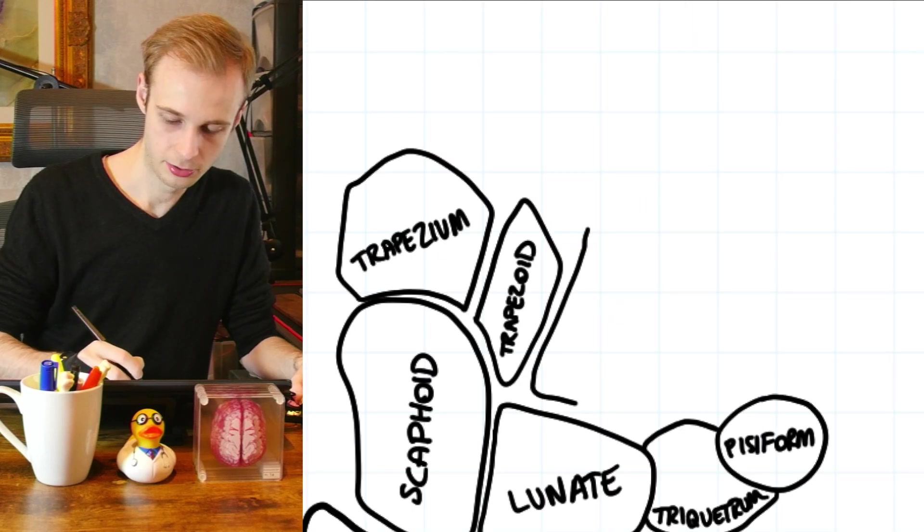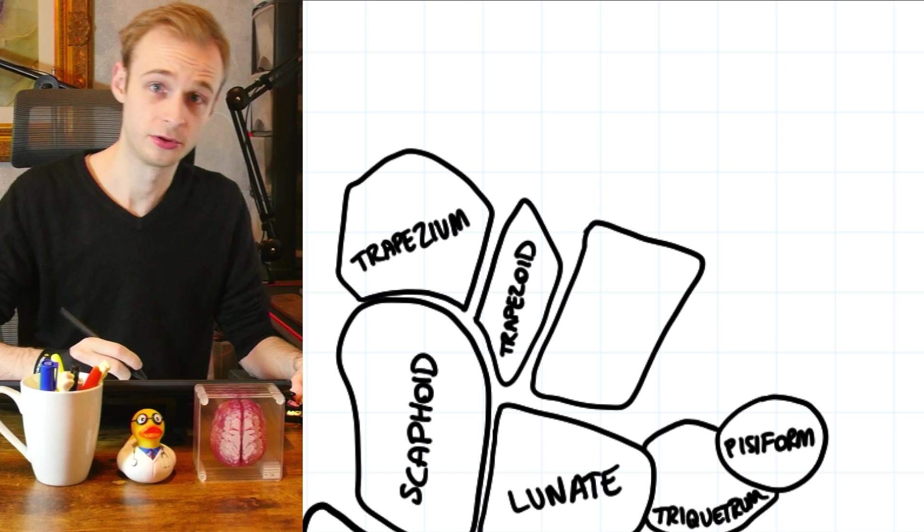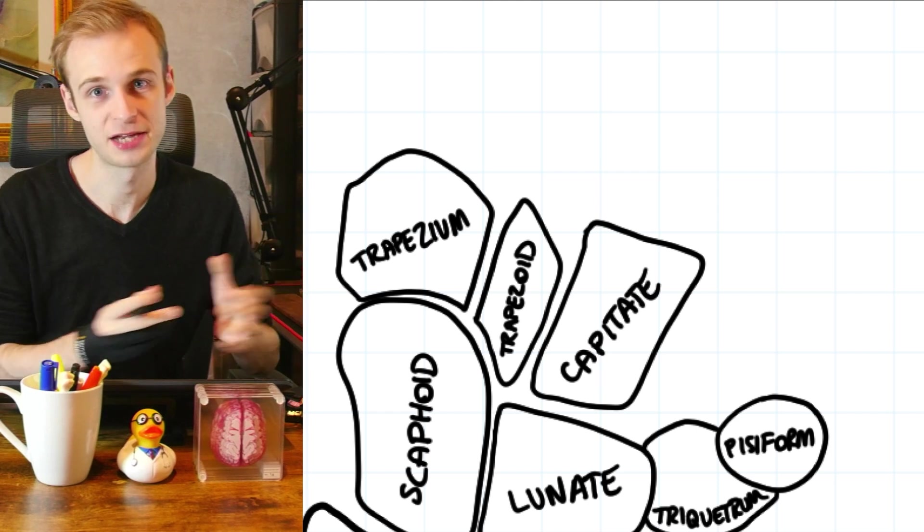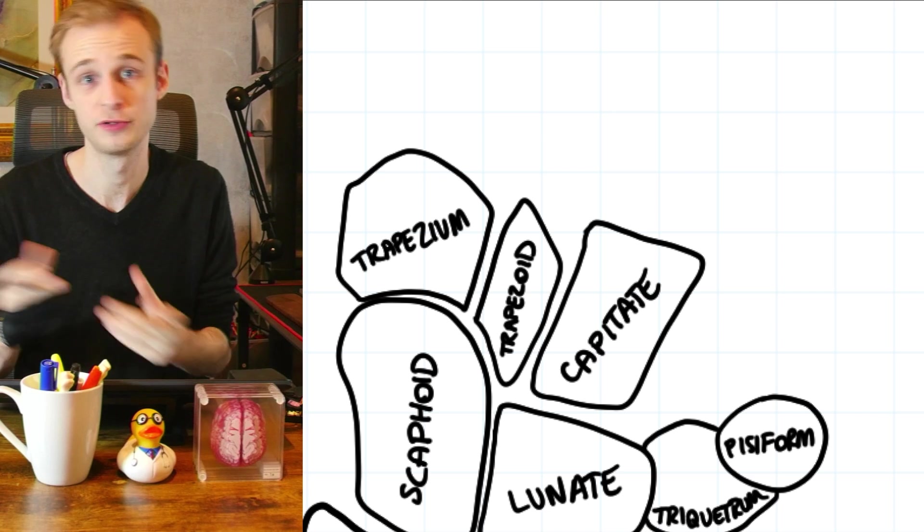Now the third bone in the distal row is called the capitate. Capitate moving back to Latin again from caput meaning head as in to decapitate to remove someone's head.